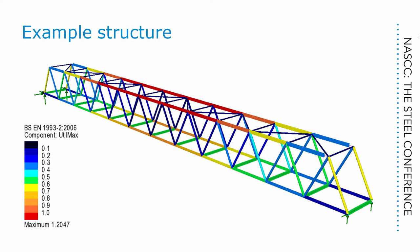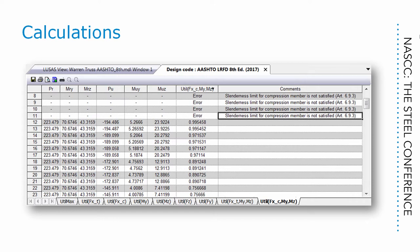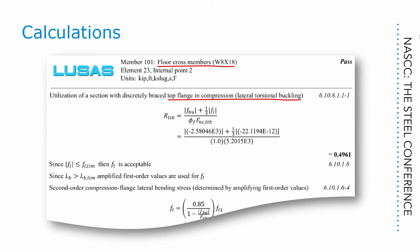LUSAS also allows us to view tabulated results. Here we can see the axial compression and moment interaction check with three columns for resistance, three columns for the ULS load effects, the utilization ratio, and finally a column with comments. But we can also view rendered calculations. These show the calculation carried out in full, like this extract from a check on a floor beam where the top flange is in compression and is checked for lateral torsional buckling. You can see how values for FBU — that's the flange stress — FL, the flange lateral bending stress, and the nominal flexural resistance are all substituted in to calculate the utilization of 0.4961. The rendered calculations include the equations, explanatory notes, and clause references.